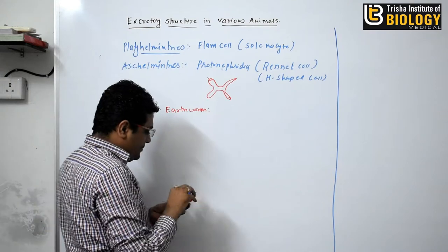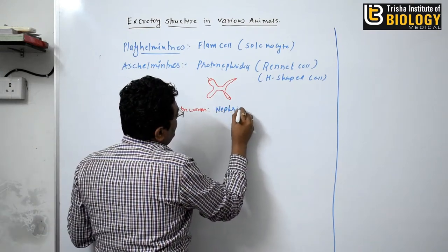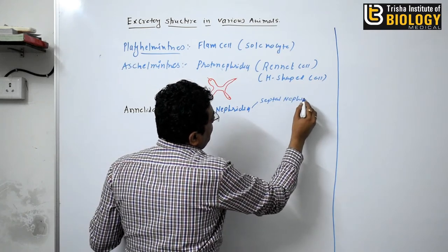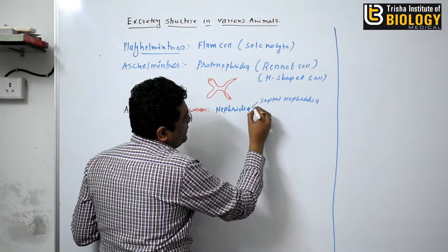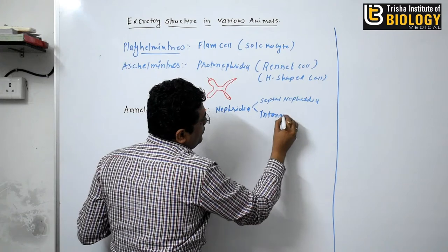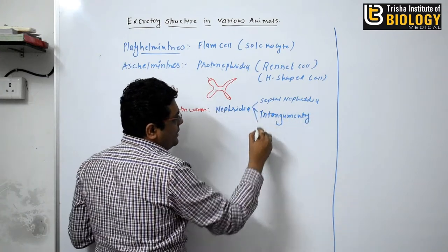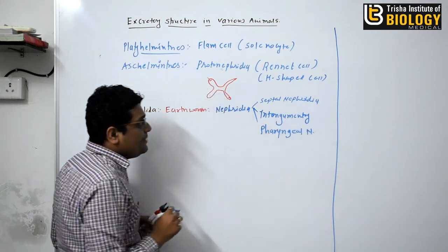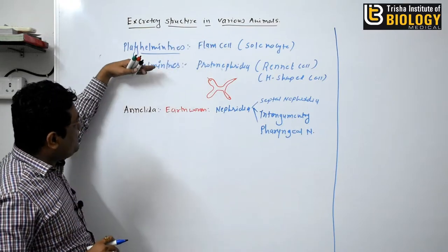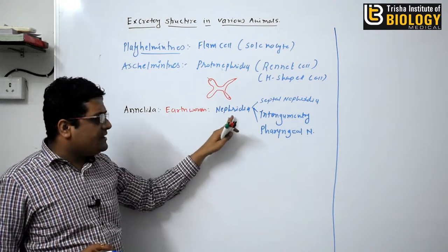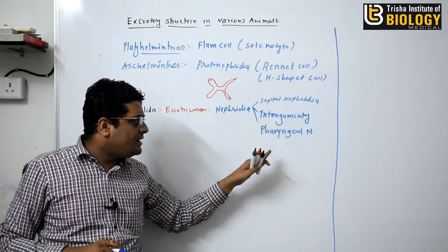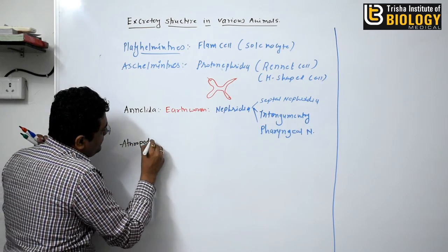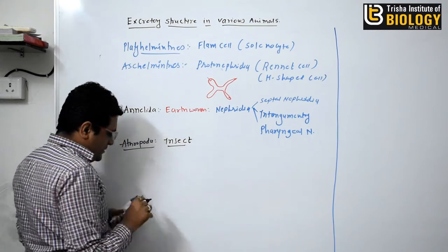Next, in Annelida — for example, the earthworm — the earthworm has nephridia. There are mainly three types of nephridia: the first is septal nephridia, the second is integumentary nephridia, and the third is pharyngeal nephridia.